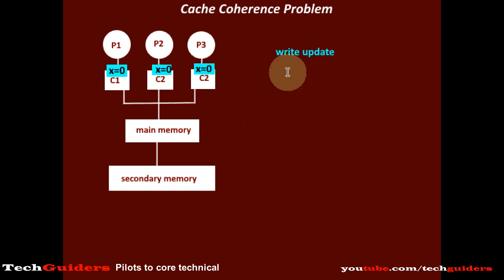In the write-update approach, whenever a processor writes to a shared data in its local cache, it broadcasts the updated value to all other local caches. Thus, any other local cache having this shared location will update it.